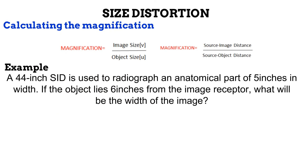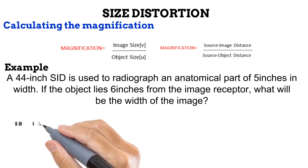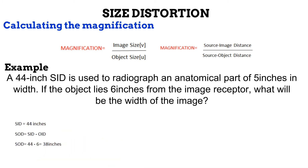In order to calculate the magnification, you need to get the image size over the object size, and the source image distance over the source object distance. For example, a 44-inch SID is used to radiograph an anatomical part of 5 inches in width. If the object lies 6 inches from the image receptor, what will be the width of the image? First you need to find the source object distance, which is the SID minus the OID. Since the object lies 6 inches from the IR, you take 44 minus 6 to get 38 inches of SOD.